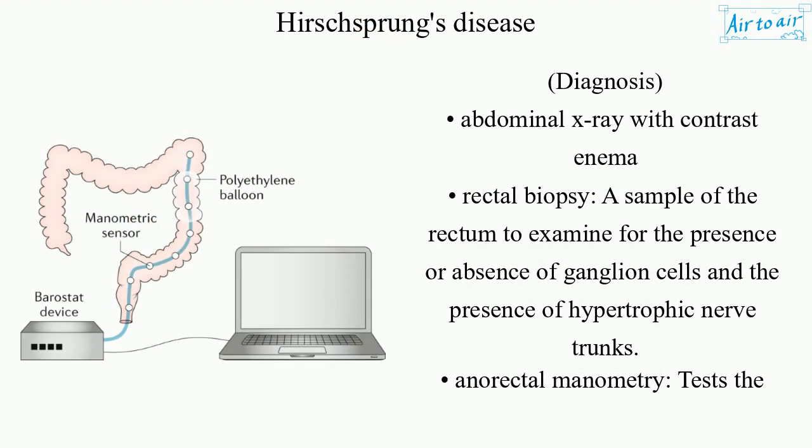Diagnosis includes an abdominal X-ray with contrast enema, and a rectal biopsy — a sample of the rectum examined for the presence or absence of ganglion cells and the presence of hypertrophic nerve trunks.